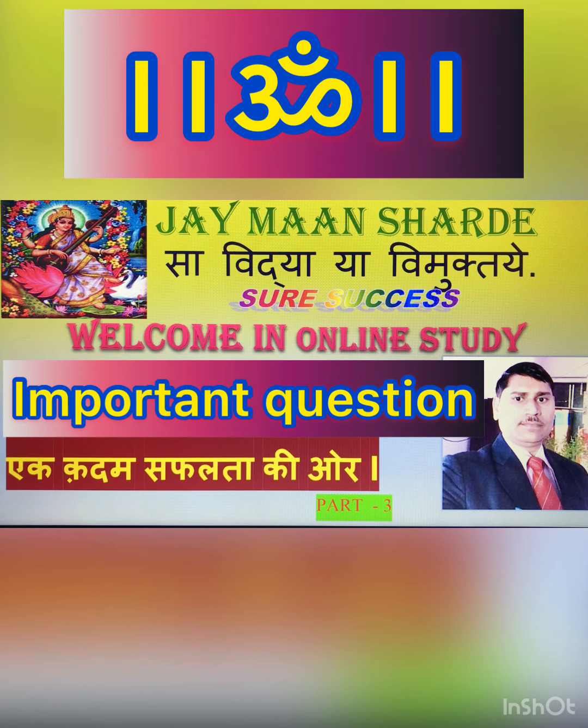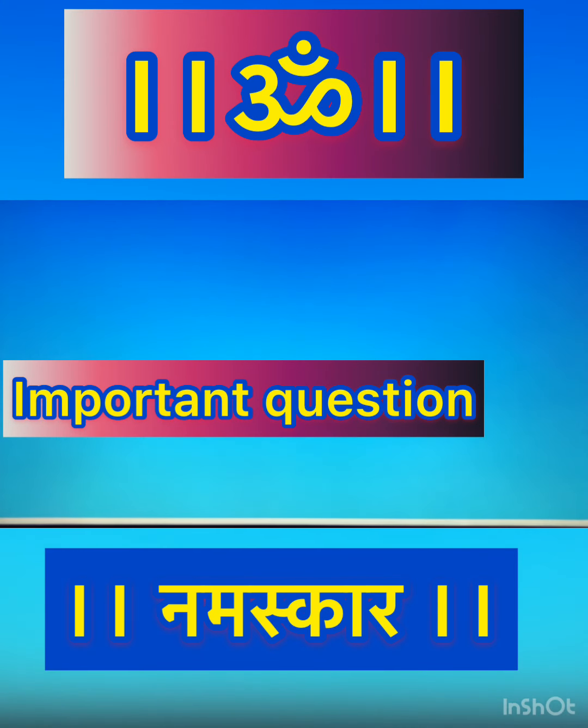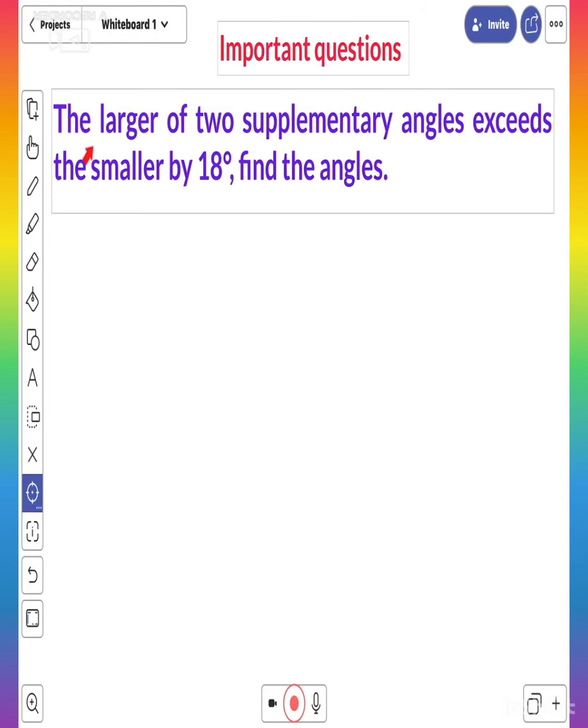Namaskar dosto, aaj ke is video me the statement of the question is: the larger of two supplementary angles exceeds the smaller by 18 degrees. Find the angles.